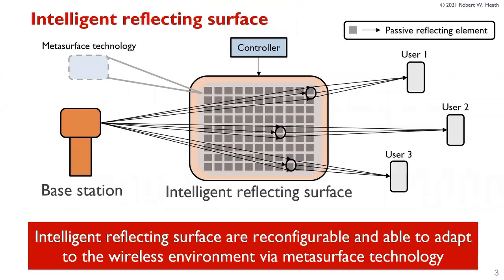Intelligent Reflecting Surfaces are a reconfigurable surface that is able to adapt to the wireless environment via metasurface technology. Much of IRS research is based on prior work for reflect arrays, and they consist of passive reflecting elements. These elements reflect signals in an intelligent way based on the metasurface technology and a controller. Coupling these together can lead to many different degrees of reconfigurability, such as frequency reconfigurability, pattern reconfigurability, beamforming, and changing polarization of incoming and transmitted waves. Here we show an example of a base station reflecting signals off of an IRS towards users, where the IRS can adapt and beamform towards specific moving users.